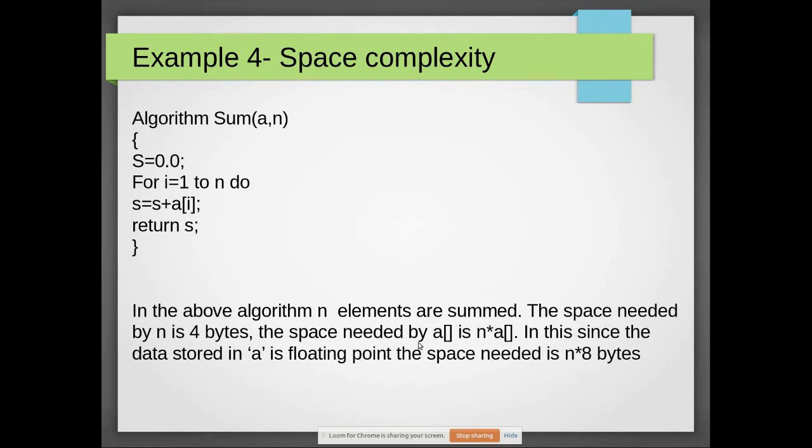The space needed by array a is n×4 bytes since we are storing array elements in a. Since the data stored in a is floating point, the space needed for floating point is 8 bytes, so n×8. For n it is 4 bytes, so the total space is 4 + n×8 bytes, depending upon the value of n.